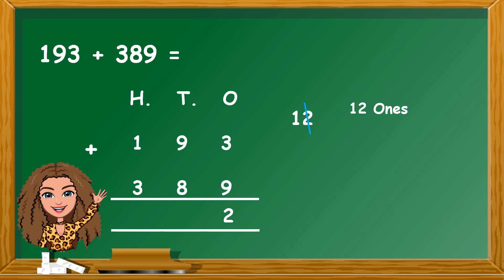Then, we have 9 and 8. 9 and 8 will give us 17. So, we have 17 tens and we have to add in the 1 ten, which will give us 18 tens. We cannot put the 18 tens under the tens, so we are going to regroup. We take out 10 tens because 10 tens is the same as 100. When we take out the 10 tens, we remain with 8 tens, which we put in our tens column. Then, we add our hundreds: 3 add 1 equals 4 hundreds. And then we add the 10 tens we regrouped — we traded the 10 tens for 100 — so 3 add 1 is 4, add 1 is 5.